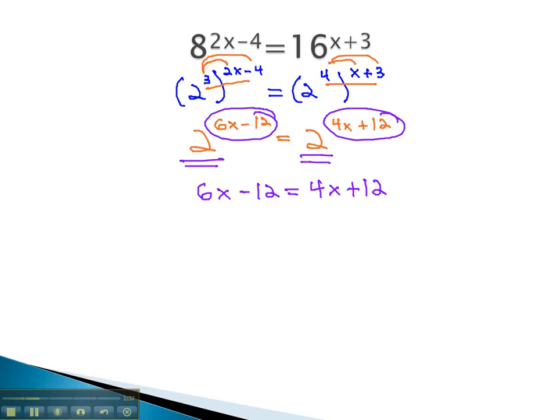And now, we can start solving the remaining equation. Moving the variables to the same side, we subtract 4x from both sides. This gives us 2x minus 12 equals 12.